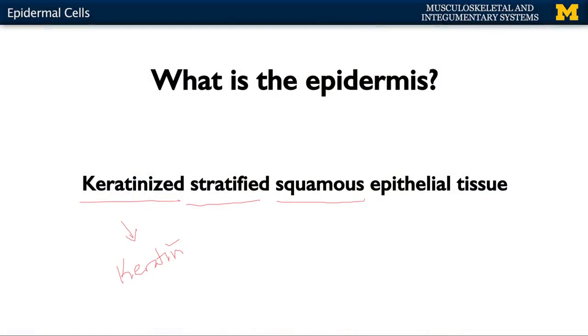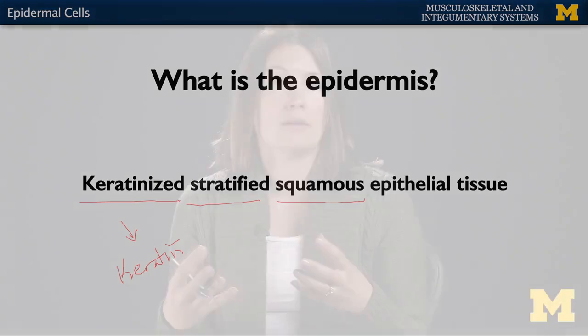Squamous means flat — a kind of elongated cell type. Particularly in the more superficial layers of the epidermis, the ones more closely associated with the external environment, these cells are going to be extremely flat. And that's actually because these cells are dead, which is why you can slough off skin.